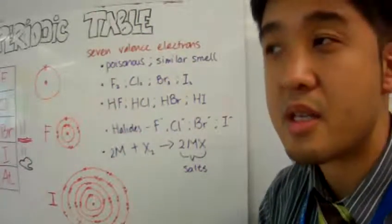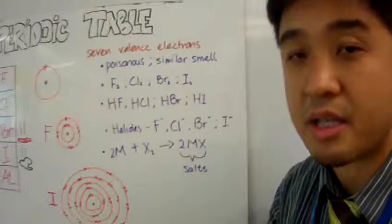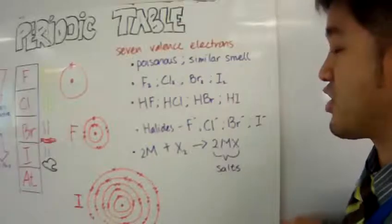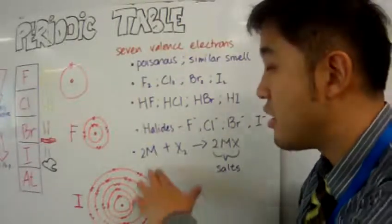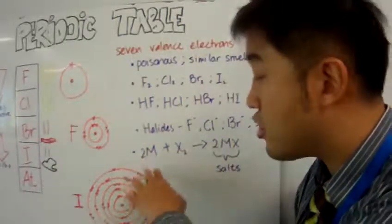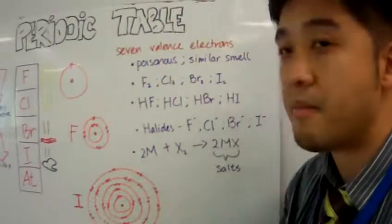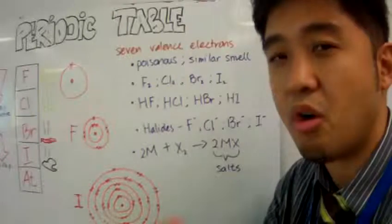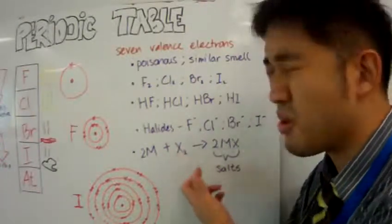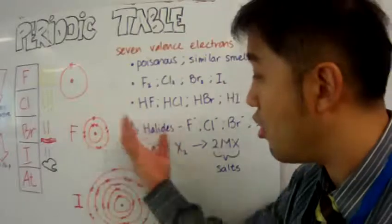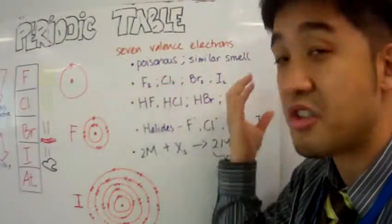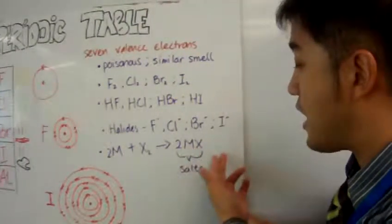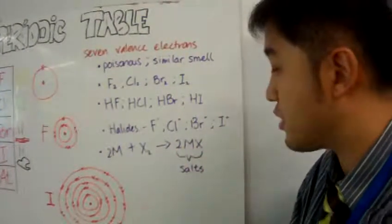Halogens also react very favorably with metals. I have a generalized equation: 2M + X2 → 2MX, where M is a general symbol for metals and X2 is the general symbol for halogens. You form a metal halide, which is a form of salt.